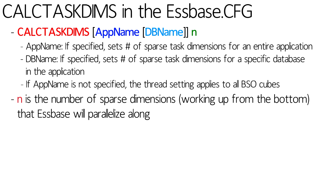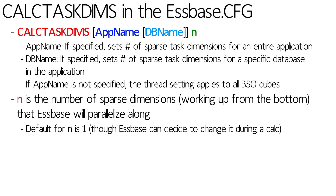When you set a number for N, it's going to look at the bottom of your outline and work its way upward to the total number of sparse dimensions that you have. So let's say the bottom two sparse dimensions in my outline are scenario and version. I would want to set CalcTaskDims to at least two, because it's really easy to parallelize along scenario and version — I can do actual while I do budget, while I do what-if, while I do forecast, and for all those I can do version 1 while I do version 2 while I do final.